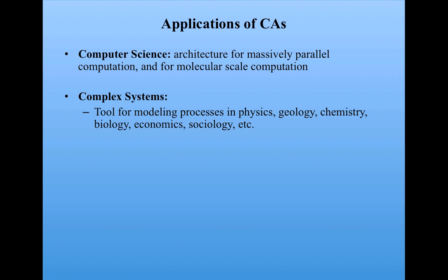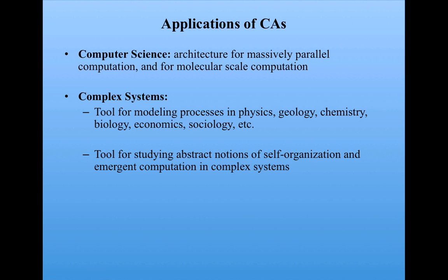In complex systems, cellular automata have been used widely as a tool for modeling processes in physics, geology, chemistry, and so on, across many disciplines. It's also been used as a tool for studying abstract notions of self-organization and emergent computation in complex systems. And that's really what we'll be focusing on in this unit. And I should point out that it's important for people studying complex systems to know something about cellular automata, because they are among the most common modeling tools in the field.